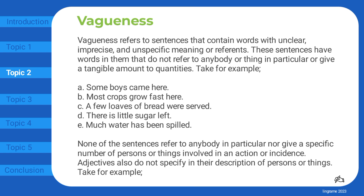Vagueness refers to sentences that contain words with unclear, imprecise, and unspecific meaning or reference. These sentences have words in them that do not refer to anybody or thing in particular, or give a tangible amount to quantities. For example: 'Some boys came here.' 'Most crops grow fast here.' 'A few loaves of bread were served.' 'There is little sugar left.' 'Much water has been spilled.'